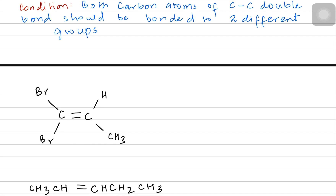Let's look at the first structure. You can see there are two carbon atoms — the yellow one and the blue one. The yellow carbon is bonded to two bromo groups, so it can't make geometrical isomers.